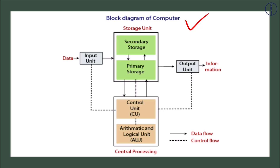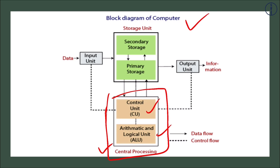The main component of the computer is the Central Processing Unit (CPU). The CPU has two components: the Control Unit and the Arithmetic and Logic Unit (ALU). These two are the basic parts of the central processing unit. Another component is the storage unit, which is divided into two parts: secondary storage and primary storage, to store data — which is essentially memory.